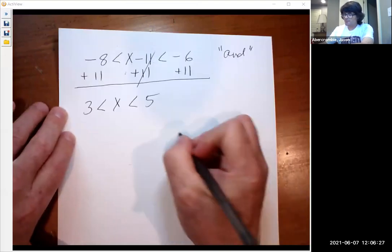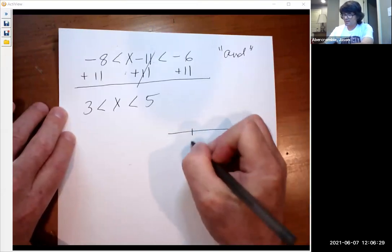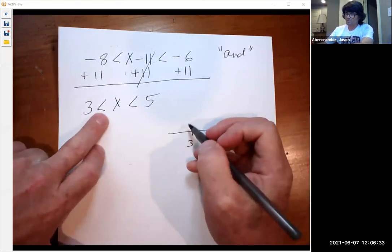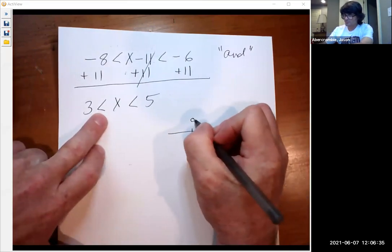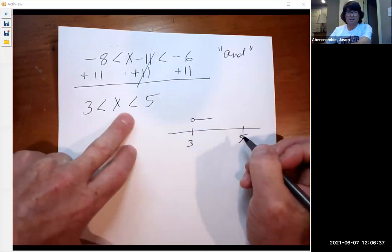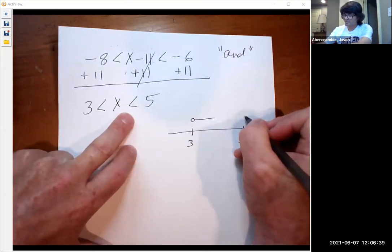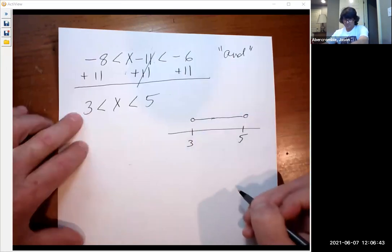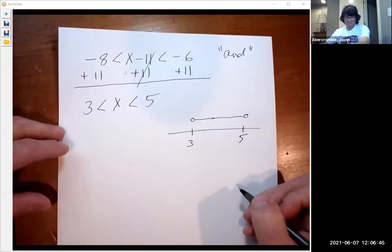And we're going to graph this now by putting a number line out there, put a 3 and a 5. x is bigger than 3, so it's going to be an open circle going this way. x is also less than 5, so you're going to have an open circle at 5. And these kind of meet up in the middle, just like that.